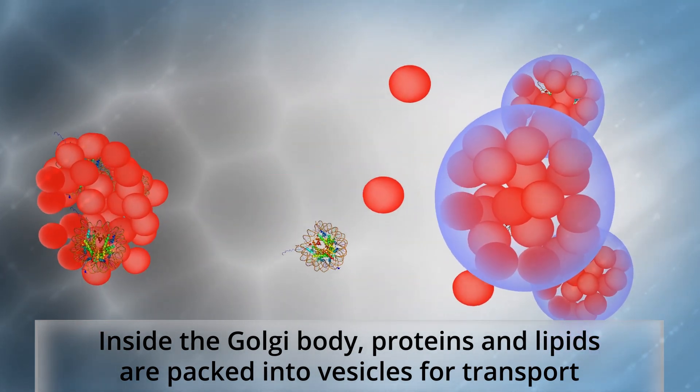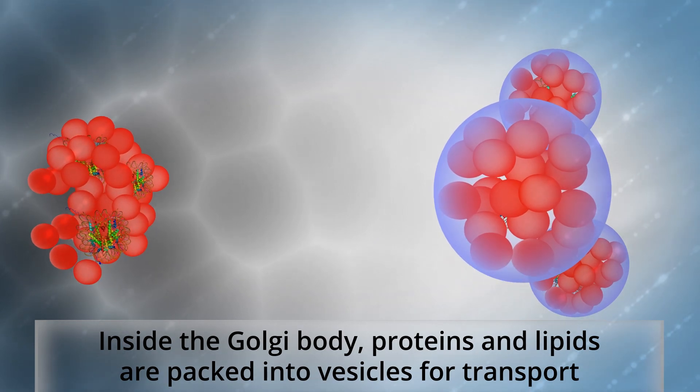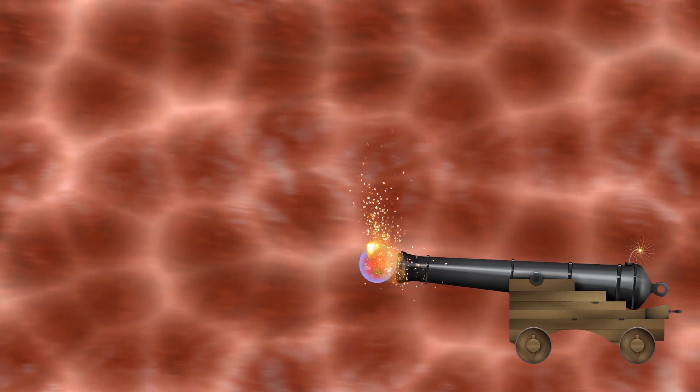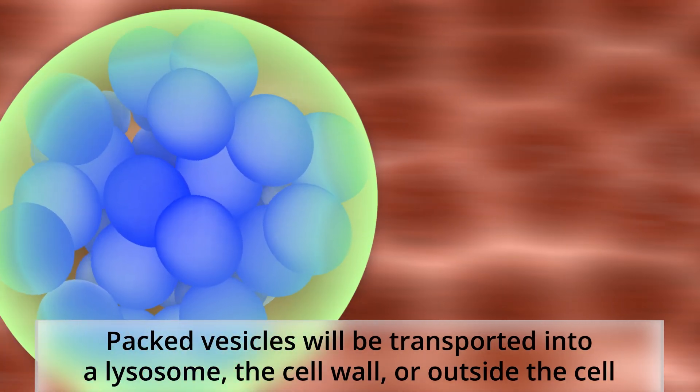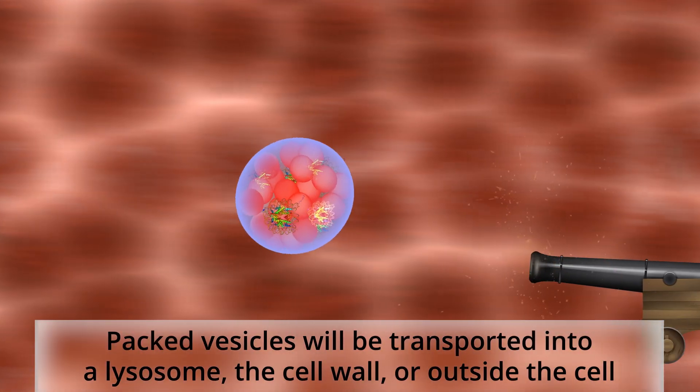These vesicle packages will either be sent to lysosomes, the plasma membrane of the cell, or they can be transported across the cell membrane and sent outside of the cell.